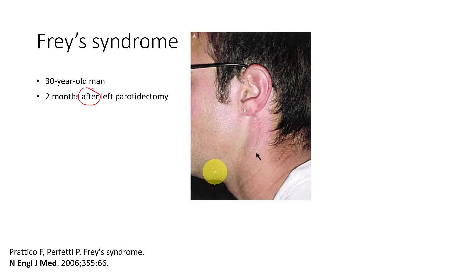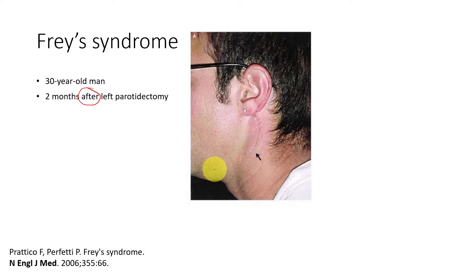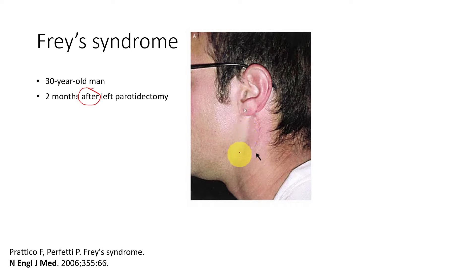So how did he present? He noticed that while he was about to eat something, his cheek over this area became very wet. That was his complaint and he was pretty scared because he knew that this was a salivary gland that had been operated on. So he doubted whether this was saliva that was leaking, and he went to the emergency department.